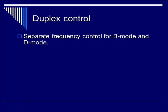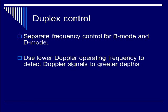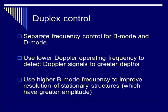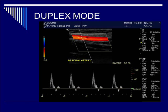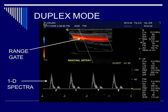Now let's move on to duplex control. What is duplex control? It is the ability to separately control the B-mode and Doppler-mode transducer frequency. By using a lower Doppler frequency, you can detect Doppler signals to greater depths, and by using a higher B-mode frequency, you improve the resolution of the stationary structures. In this example of the brachial artery, you can tell it is operating in duplex mode. The B-mode frequency is 12 MHz, giving you better resolution of the anatomy, while the Doppler frequency is only 5 MHz.